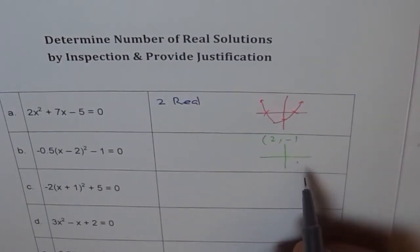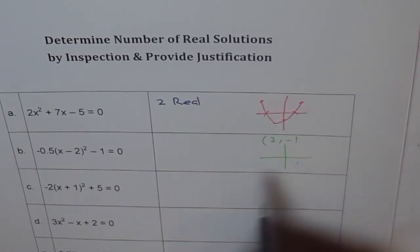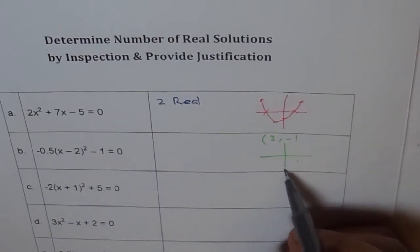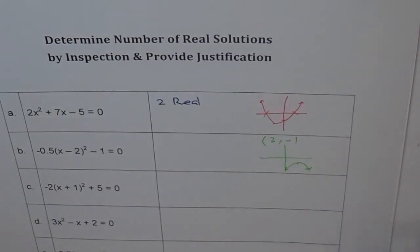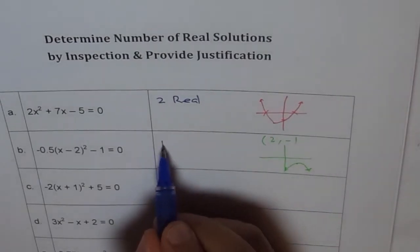And -0.5 indicates that the graph will go down, right? So then we can't expect any real x-intercept, and therefore we don't have any real solution. So no real solution.